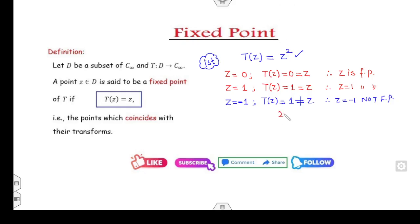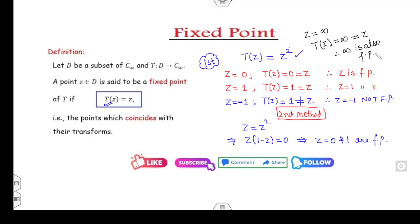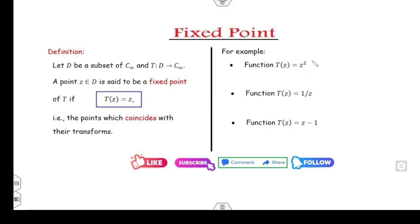The second method is to use the definition. You start with Z = T(Z). Since T(Z) = Z², we get Z − Z² = 0, i.e., Z(1 − Z) = 0, which gives Z = 0 and Z = 1 as fixed points. Moreover, if Z = ∞, then T(∞) = ∞, so infinity is also a fixed point. Therefore 0, 1, and ∞ are the fixed points.